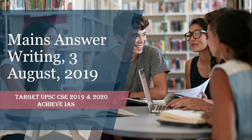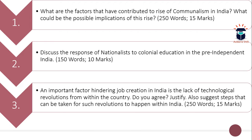Today is the third of August, so let's see what the questions are for today. The first question is: what are the factors that have contributed to the rise of criminalism in India, and what could be the possible implications of this rise? You have to discuss both the factors and the implications. The word limit is 250 and maximum marks are 15.